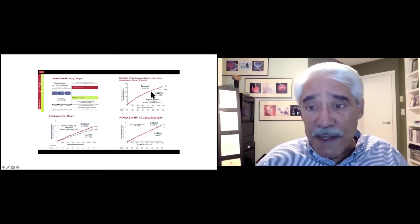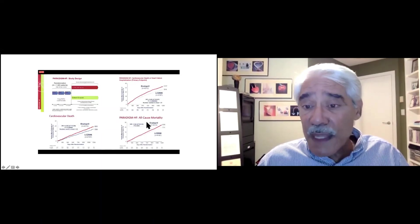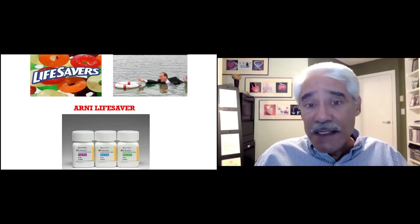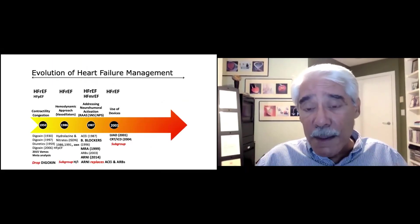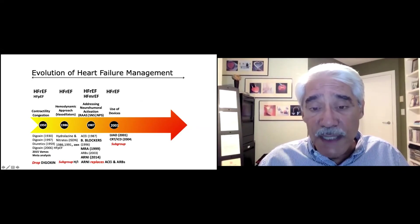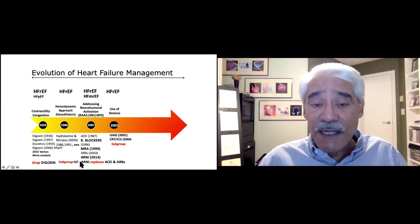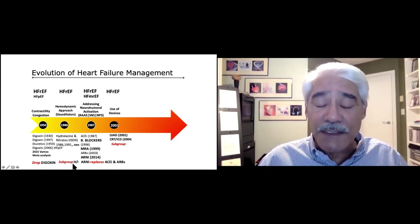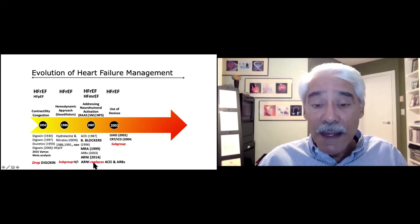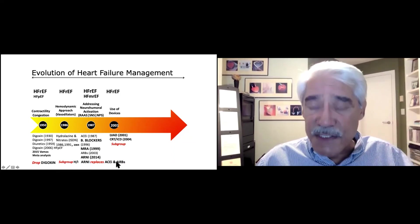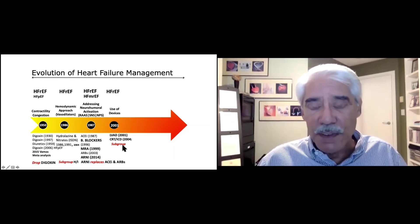ARNIs improved the primary endpoint, decreased cardiovascular death, and also decreased all-cause mortality. ARNIs became lifesavers, improving heart failure mortality over and above what ACE inhibitors or ARBs can do. So we have dropped digoxin. Hydralazine and isosorbide is useful in a subgroup — black patients with systolic heart failure. ARNI is far more effective than ACE inhibitor and ARB and now replaces them, giving the same benefits of ACE and ARBs plus additional neprilysin inhibition that further improves mortality.